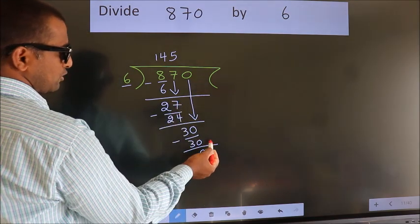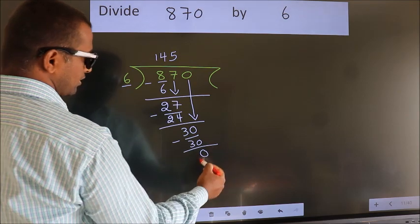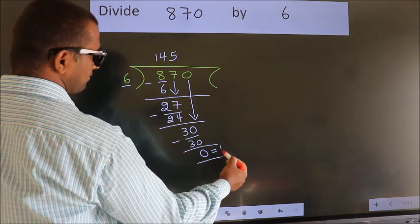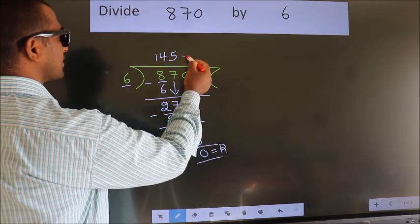No more numbers to bring down. So, we stop here. This is our remainder. This is our quotient.